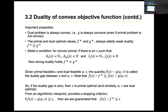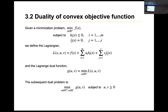This is important: the dual problem is always convex, and g of the constraint is always convex, even if the primal problem is not convex. The primal and dual optimal values f* and g* always satisfy weak duality. If it's strong duality, f* equals g*. For that, we mention the Slater condition.